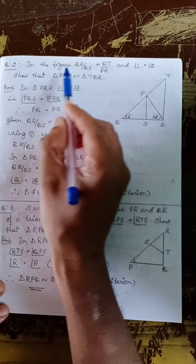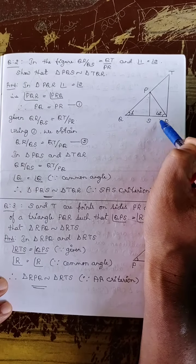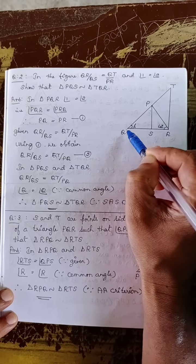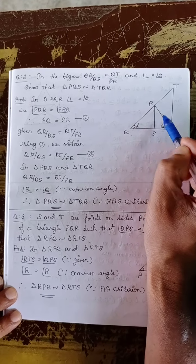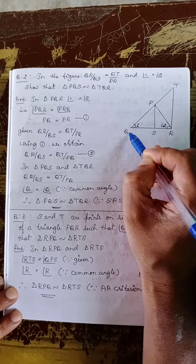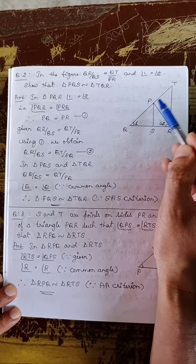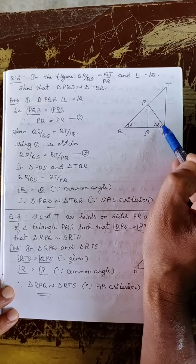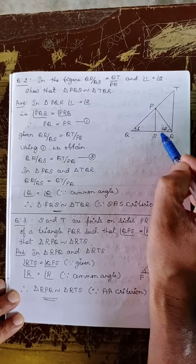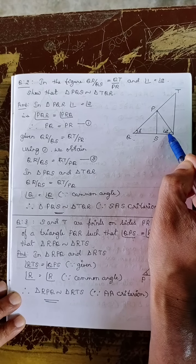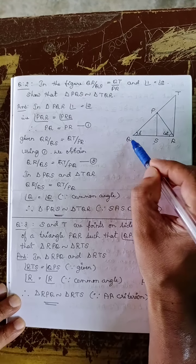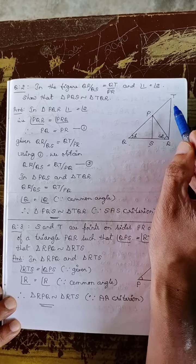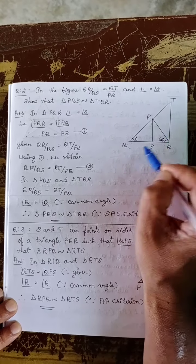Question number 2: In the figure, QR by QS is equal to QT by PR, and angle 1 is equal to angle 2. Show that triangle PQS is similar to triangle TQR.